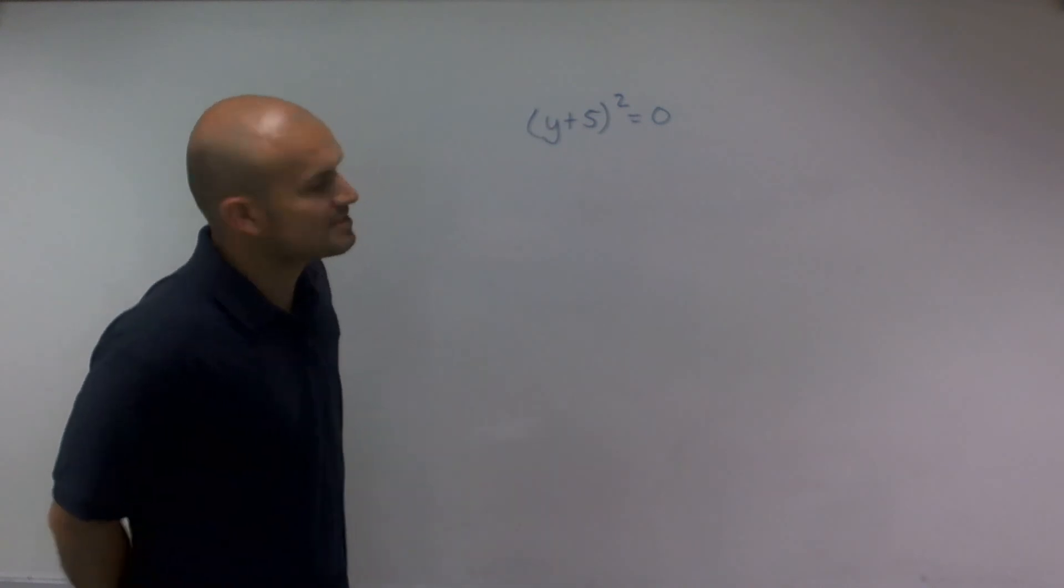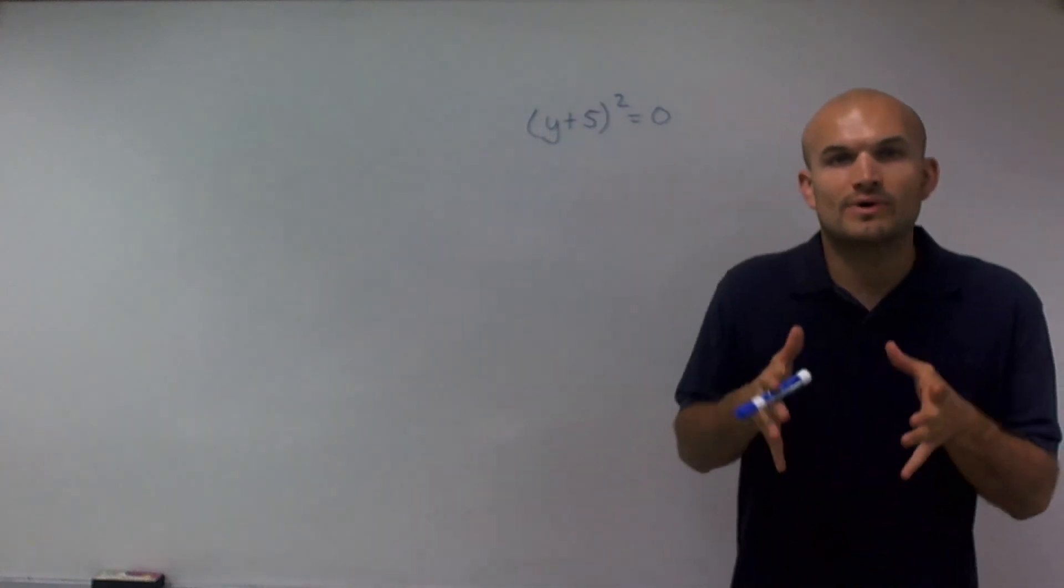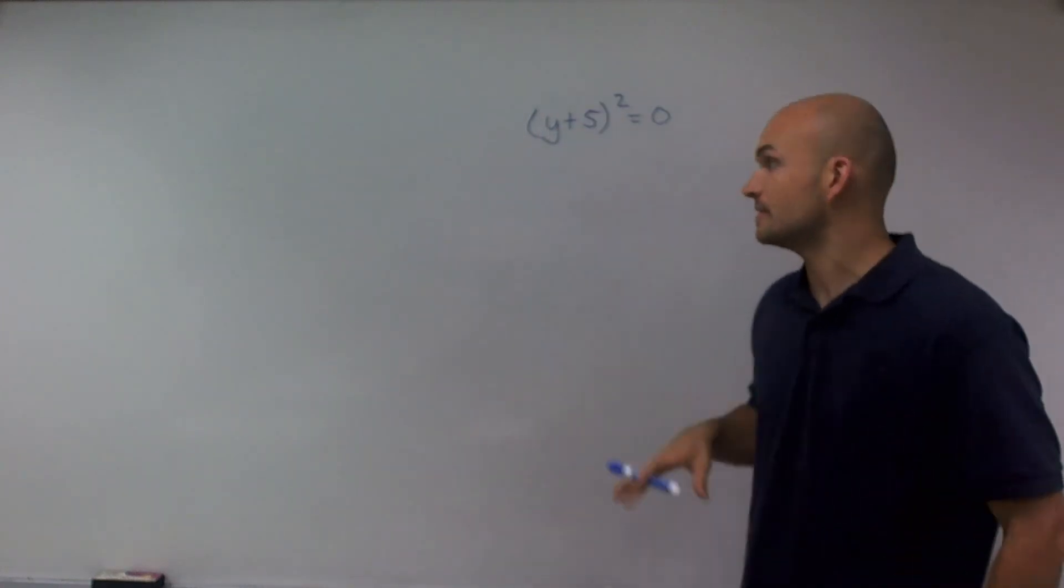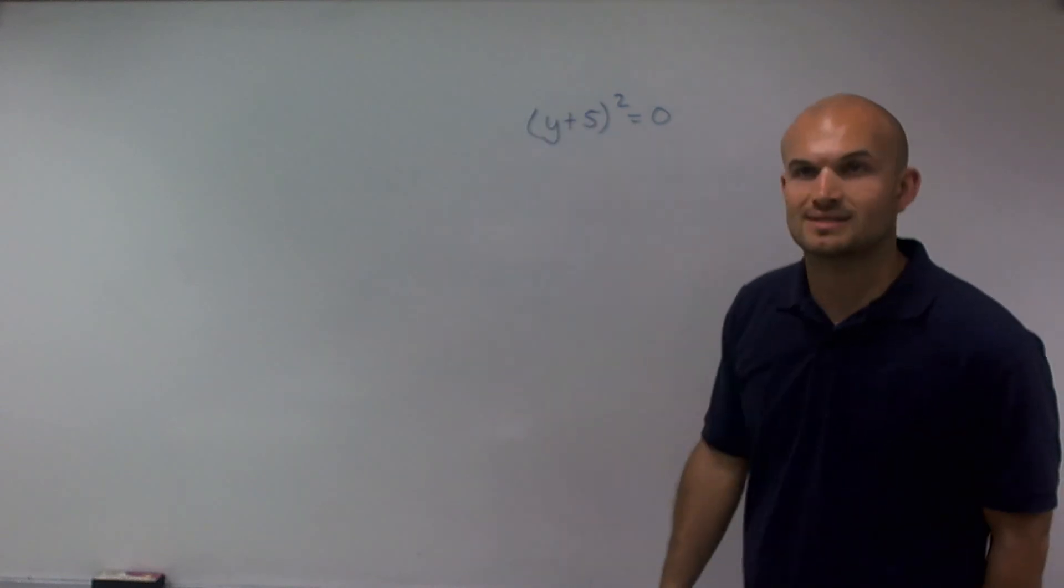So the first thing when I look at this is remember when we solved one and two-step equations, we had to take our variable and isolate it, right? We undid the operations that were happening to it. So the main important thing when we're solving is we want to make sure that we get our variable all by itself.